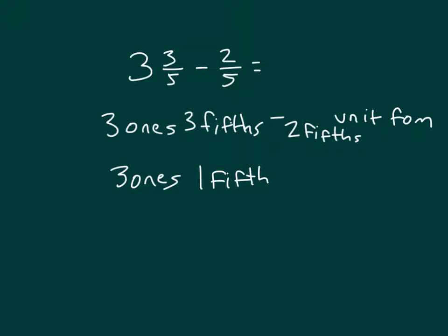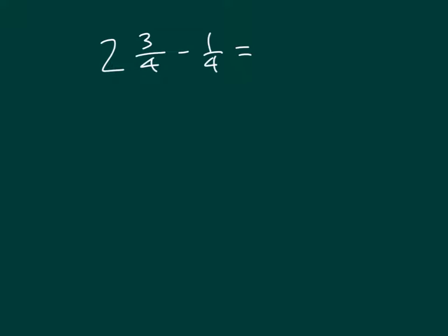So to write that as a mixed number, we would have 3 and 1/5th. It's 3/5ths minus 2/5ths, which is 1/5th, and then our wholes — 3 wholes — because it was 3 ones minus 0 ones.